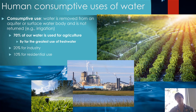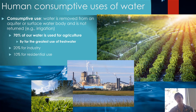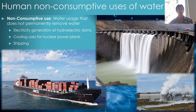20% of water use is for industry, and there are a lot of industrial uses for water. 10% is for residential use — that's going to be drinking water as well as the water we use to irrigate our lawns, which is separate from water used for agriculture.